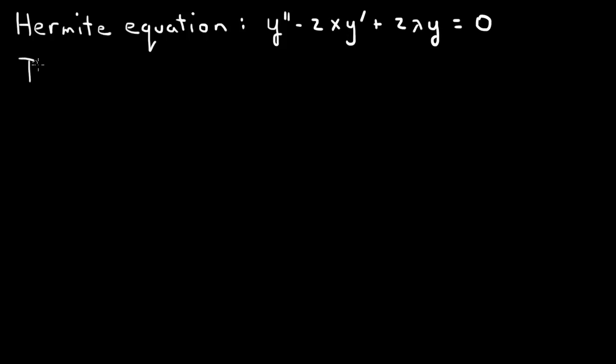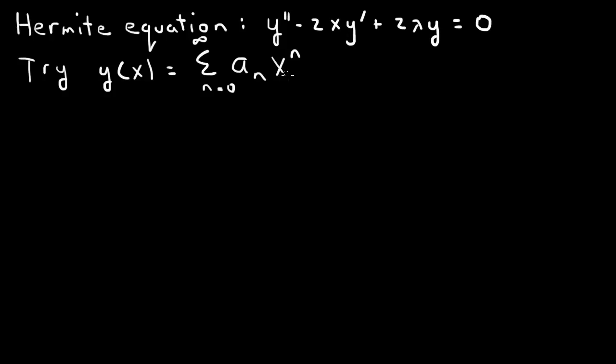Our approach will be by power series. We try the power series solution y(x) = Σ(n=0 to ∞) aₙxⁿ and substitute into this equation. For the second derivative, the first two terms will be 0, so we have the sum from n=2 to infinity of n(n-1)aₙx^(n-2).